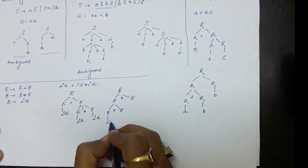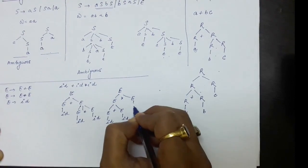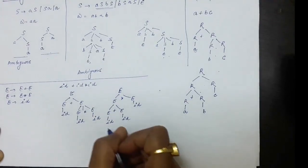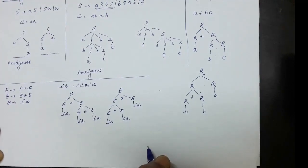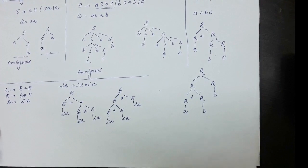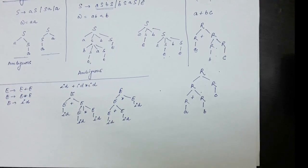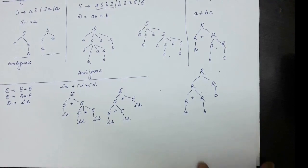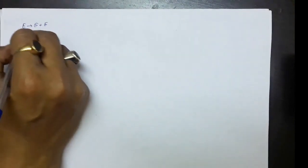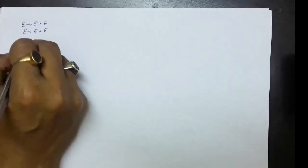There are certain problems associated with ambiguous grammars, and we must take action to convert them to unambiguous grammars. There are two things to take care of for such grammars like E produces E plus E, E produces E multiplied with E, and E produces id, where we are defining rules for arithmetic expressions involving plus and multiplication.